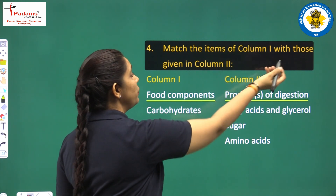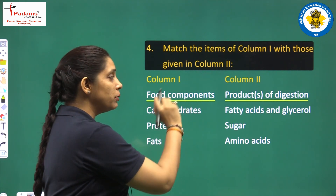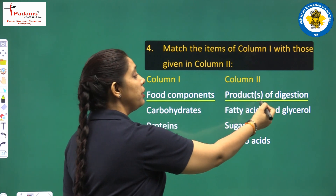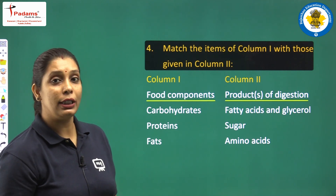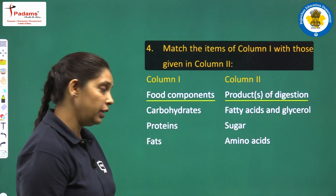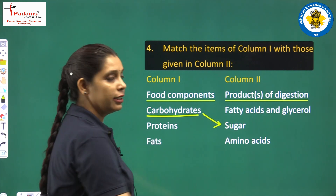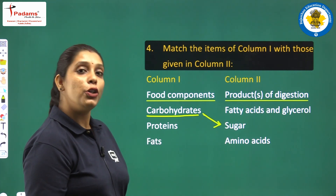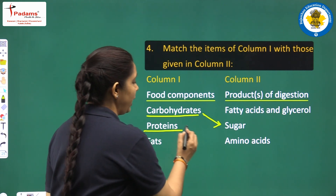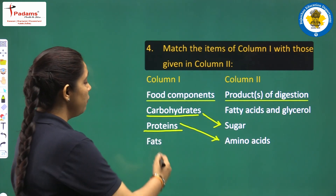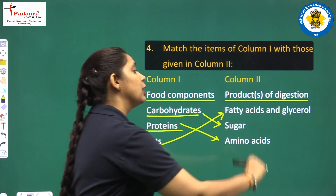Match the items of column one with column two. Food components are in column one; products of digestion are in column two — we have to match what simpler substances are formed after digestion. Carbohydrate digestion produces simple sugars, so match carbohydrate with sugar. Proteins break into amino acids. Fats break into fatty acids and glycerol.